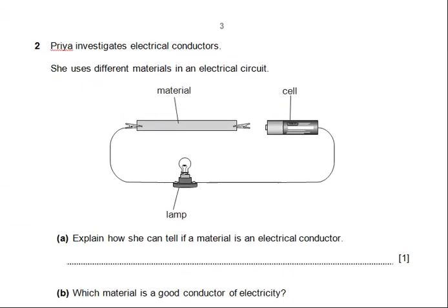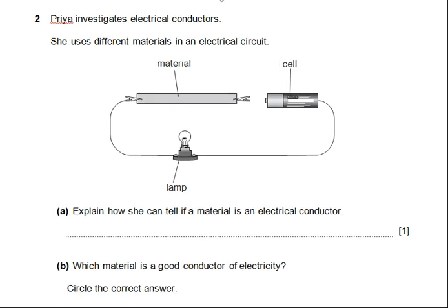Let's go to question number two on page three. Here, someone is investigating electrical conductors using different materials in an electrical circuit. This person is using different materials to see which one conducts electricity. Question A says: explain how she can tell if a material is an electrical conductor. How does this person know which material conducts electricity? What will happen to the circuit if a material conducts electricity? Of course, the circuit will start to work — the lamp will work.